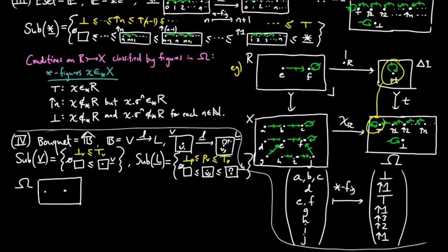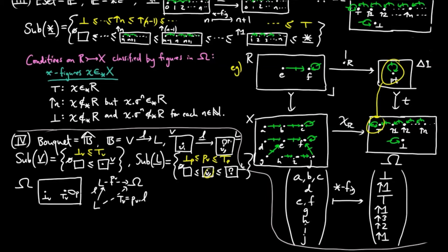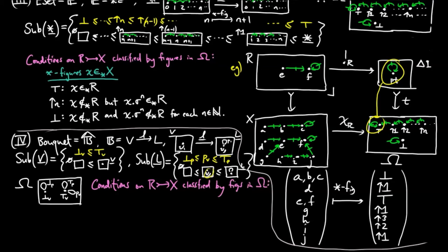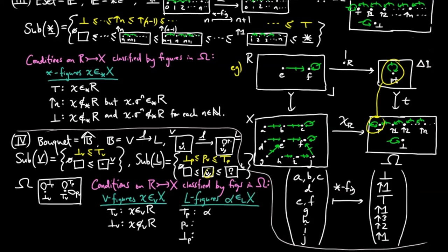Therefore, Ω has two vertices and three petals. The l-boundary of the petals is given by the pullback along underline l, so p_v has l-boundary at the true vertex. The false petal has l-boundary at the false vertex, and the true petal has l-boundary at the true vertex, and so Ω is the following bouquet. The conditions on a sub-bouquet R of X classified by figures in Ω occur at two levels. For v-figures, if little x is a v-element of X, either x is in R or it is not. For l-figures, if alpha is a petal of X, then either alpha is a petal of R, or alpha is not a petal of R but its l-boundary is a vertex of R, or alpha is not a petal of R and neither is the l-boundary a vertex of R.